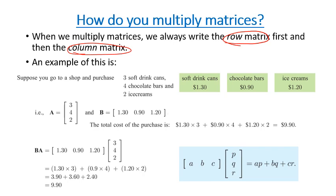So we're going to use a bit of an example to try and explain this. Suppose you go to a shop and you want to purchase three soft drinks, four chocolate bars, and two ice creams. Now we can make a matrix of that, as shown over here, matrix A with 3, 4, 2 - three soft drinks, four chocolate bars, and two ice creams.